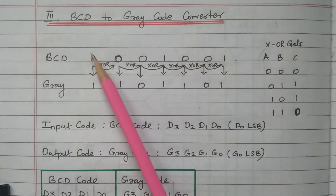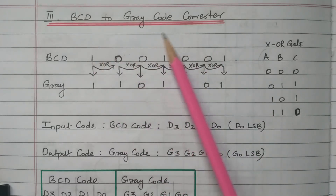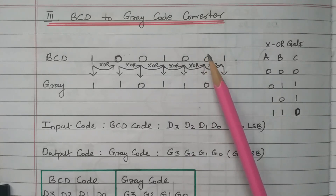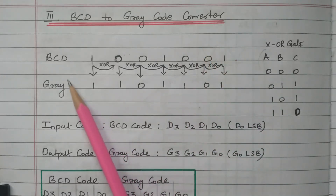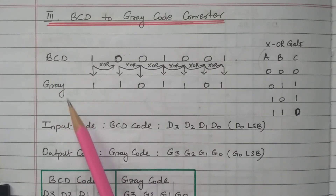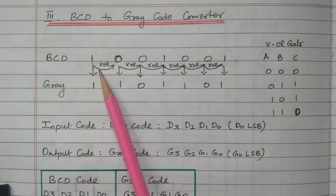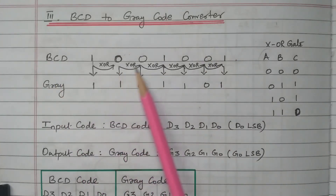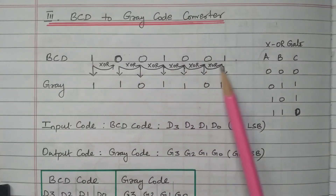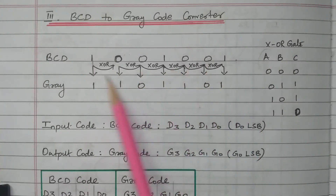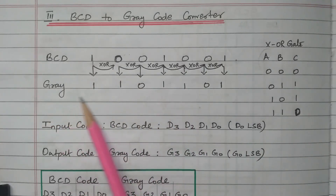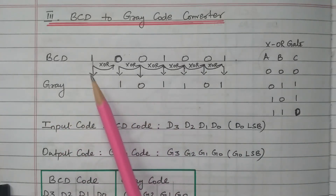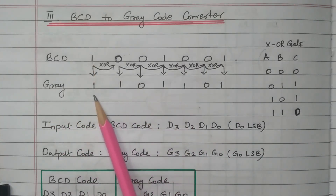We need to convert the BCD code into gray code by using the converter, and we need to develop the logic diagram. First we will see how to convert BCD to gray code. Let us consider this BCD code 1 0 0 1 0 0 1. This is the BCD code. The first digit is written as it is for the resultant gray code.